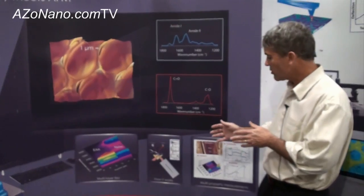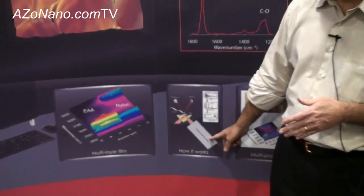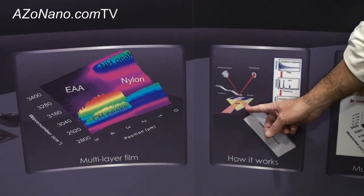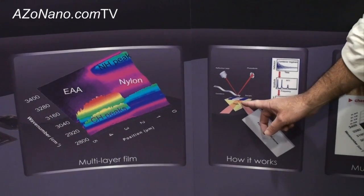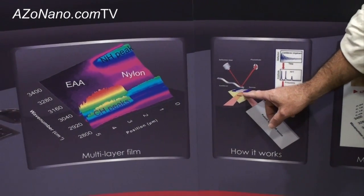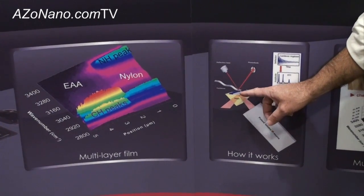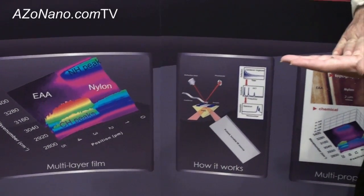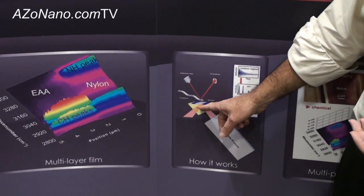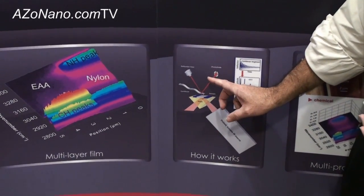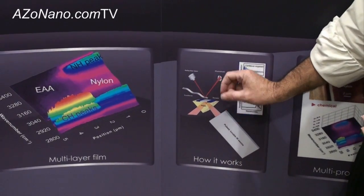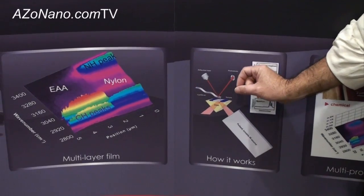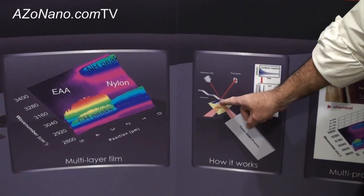The way the technique works is we have a pulsed tunable IR source, and we direct the illumination up through an IR transparent prism to the underside of a thin sample mounted on the surface of the prism. Coincident with the beam, we have an AFM cantilever essentially at the same location. When we pulse the IR light, if the infrared light is at an absorption of the sample, the sample will absorb the light, rapidly heat up, and rapidly expand.